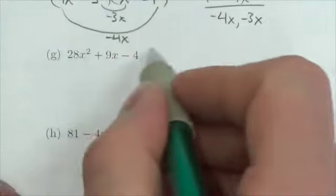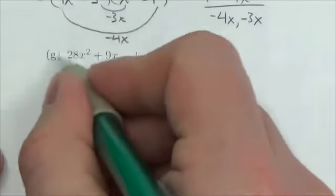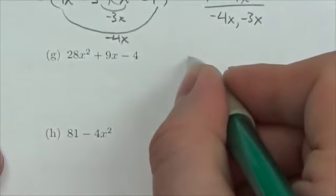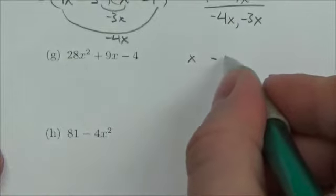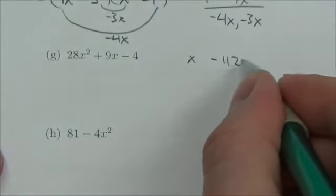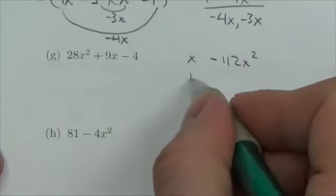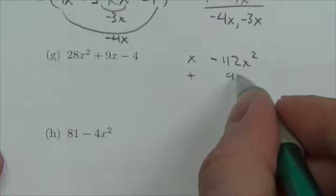So this is a trinomial, so we're going to attack this the way we do our trinomials. We're going to take that first term, multiply it by our last term, and so now we're looking for two numbers whose product is negative 112x² and whose sum is positive 9x.